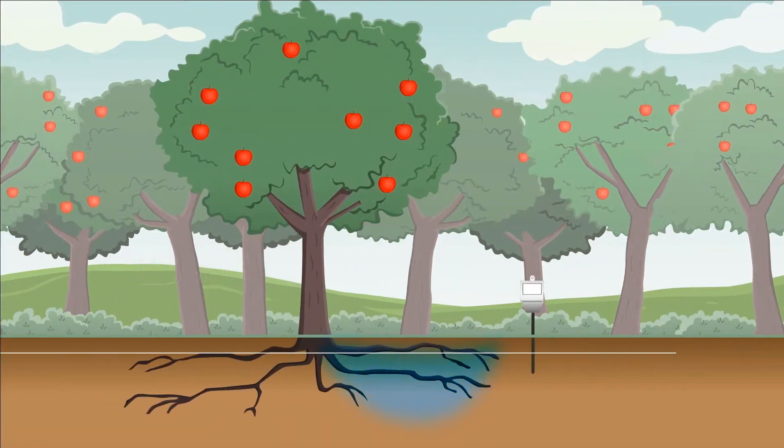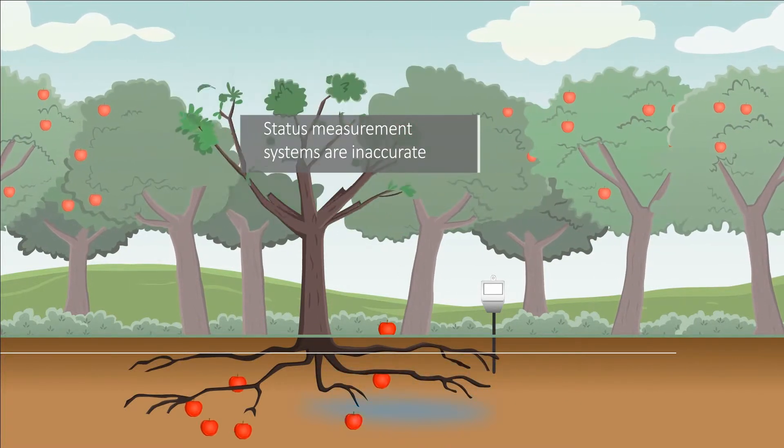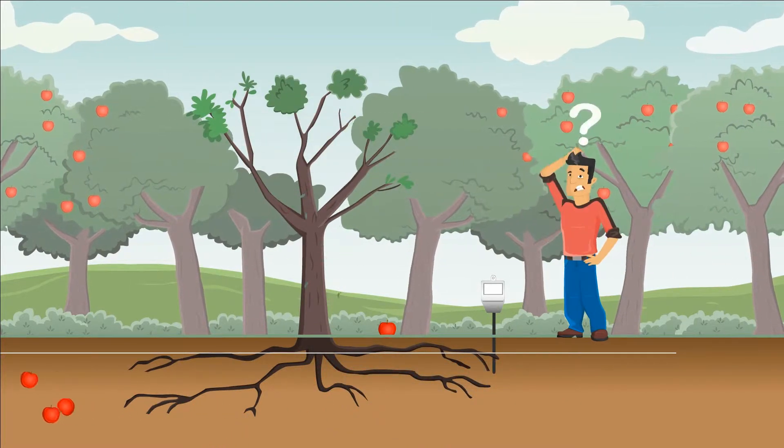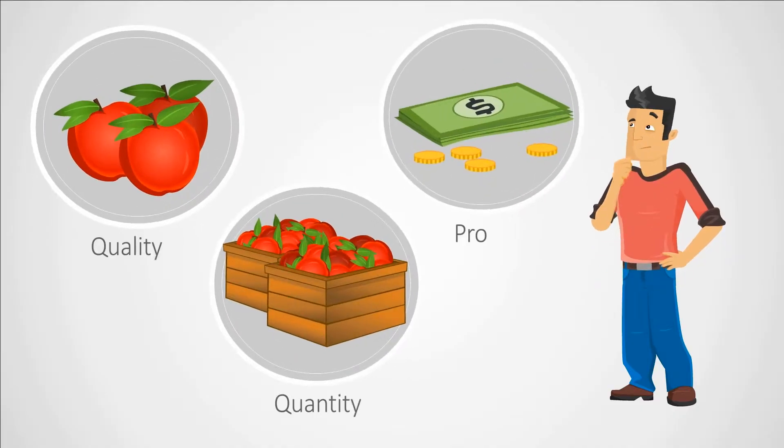Current water status measurement systems provide inaccurate estimates at best. Not knowing the exact water needs has a significant impact on the tree's health, the quality and quantity of the crop, and ultimately profits.